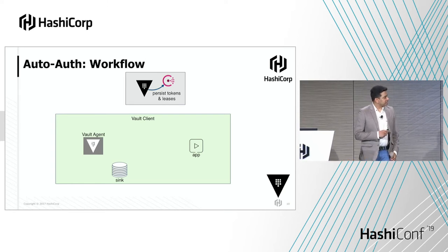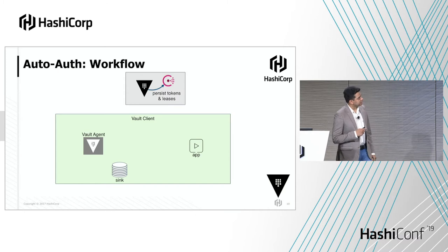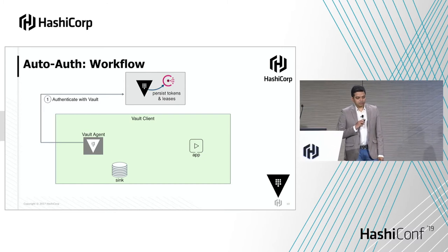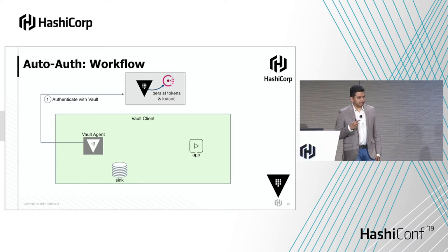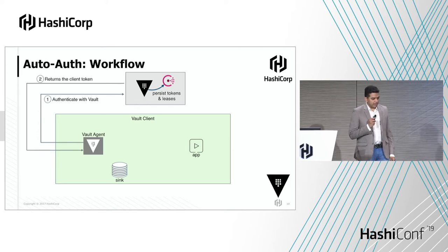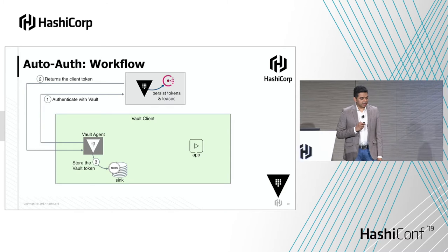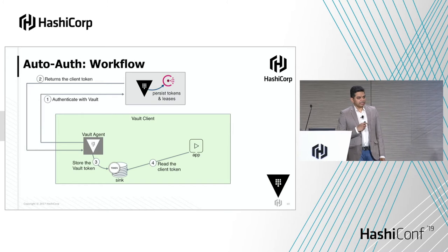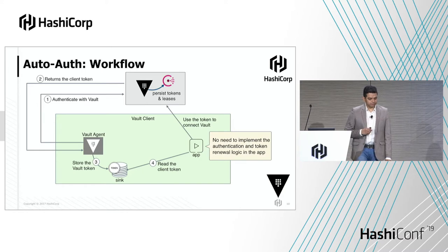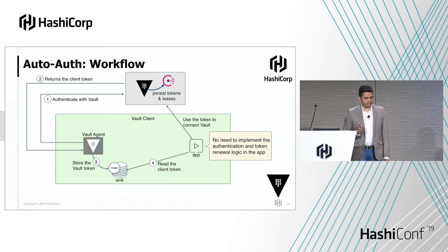The green block represents the client side and the gray block represents the Vault server side. The application doesn't need to do anything — the agent automatically reads the configuration, sees the method and the sink, interacts with Vault, gets the Vault token back, and dumps it in the defined sink. The application only needs to look at the sink, take the token, and use it to interact with Vault directly. The client does not need to implement authentication or token renewal logic at all; the agent takes care of all that.